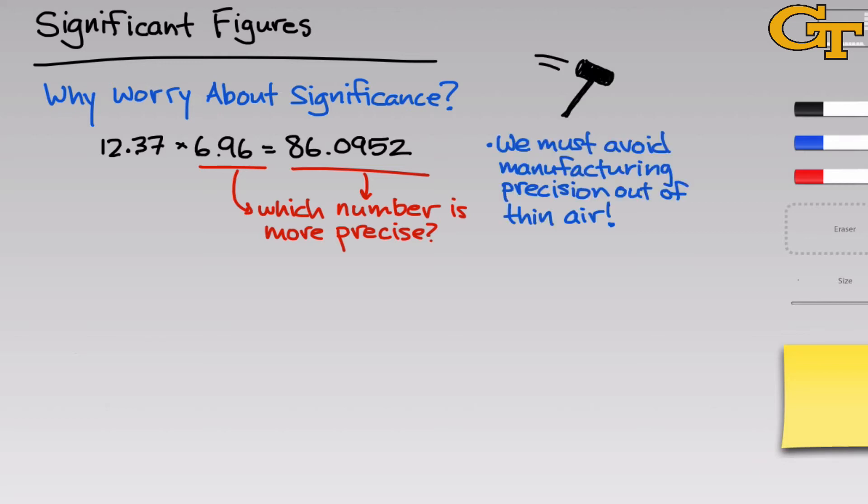This is a huge issue. And the thing we need to be aware of is that we must avoid manufacturing precision out of thin air. Simply multiplying two measurements with only two digits after the decimal cannot yield a result that has more than two digits after the decimal because the true precision in both of our measurements and the result is really only two digits after the decimal place.